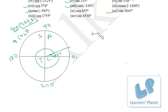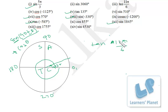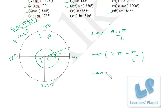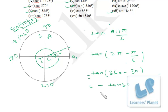Now let's calculate tan(11π/6). We can write 11π/6 = 2π − π/6. Since 2π = 360°, this is tan(360 − 30°). That means tan(−30°) = minus tan 30°. Tan 30° is 1/√3. So the value of tan(11π/6) is minus 1/√3.